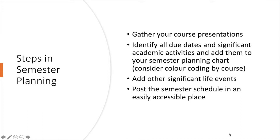For semester planning, the first step is to gather all of your course syllabi together. Go through them and pay particular attention to any due dates and significant academic activities — presentations, homework due dates, quizzes, major assignments, tests, and exams. Add all of these important dates to a semester planning chart, and you might want to color code them by course. Next, add in any significant life events, big commitments, or fun things you know are going to happen. Lastly, post the semester schedule in an easily accessible place so you can refer back to it often.